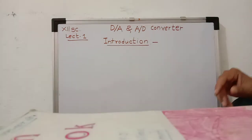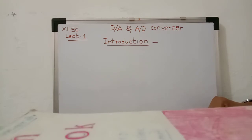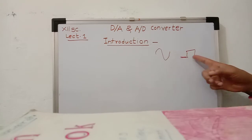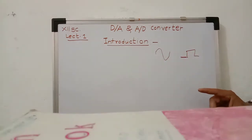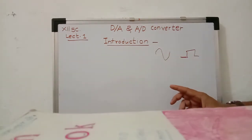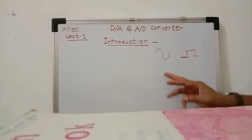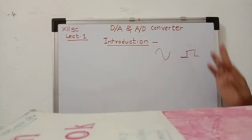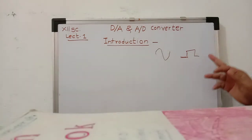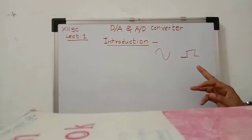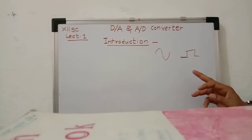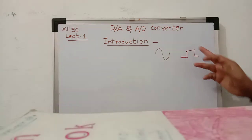There are two types of electrical signals. One is called an Analog signal and another is a Digital signal. This Analog signal is obtained from different types of Transducers, such as Temperature, Pressure, or Vibration type Transducers. Digital signal is obtained from Flip-Flop or Multivibrator circuits — Astable, Bistable, or Monostable Multivibrator circuits.